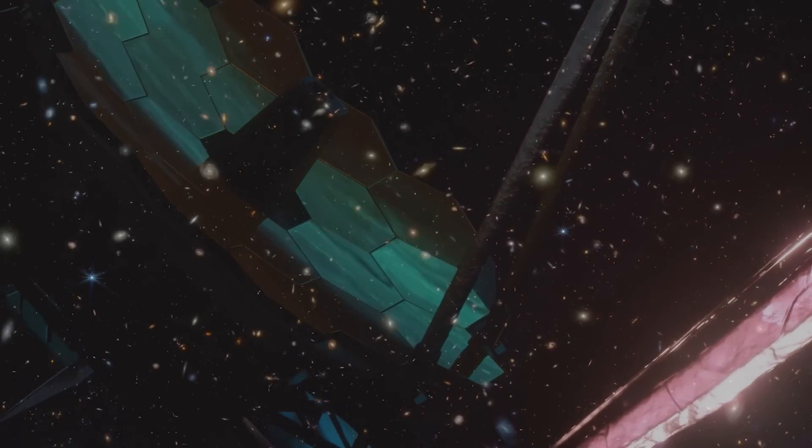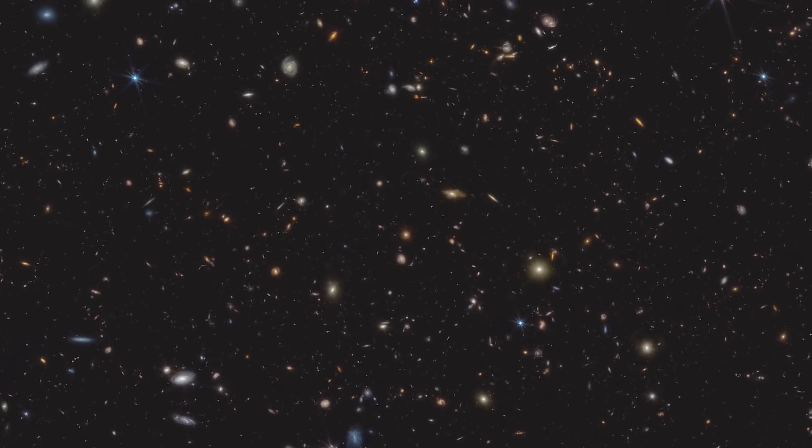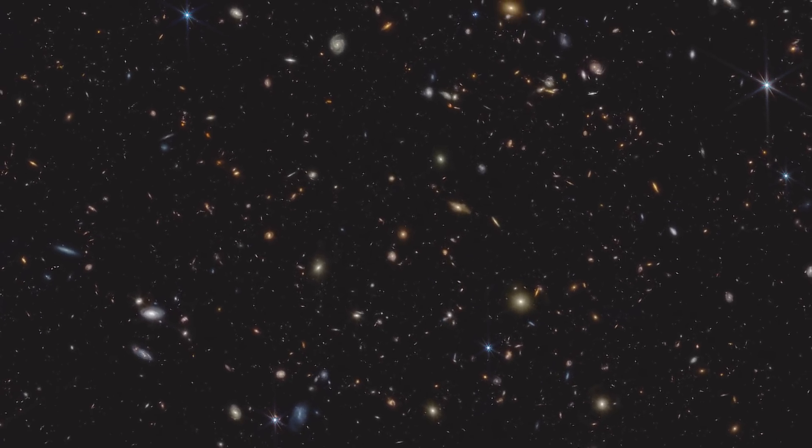The images shown by the James Webb telescope have a flaw. They show an unusually large number of smooth, compact, and ancient galaxies. This seems to contradict the Big Bang theory. But why?